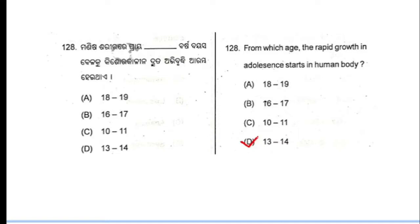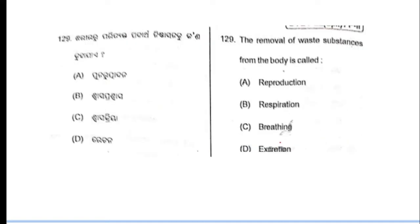So rapid growth and development happen in the earlier adolescence stage. Option number D is the correct answer — 13 to 14 years. Now moving to next question.